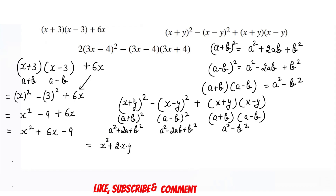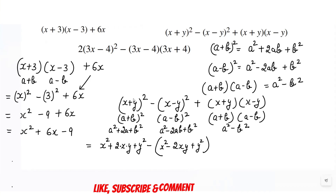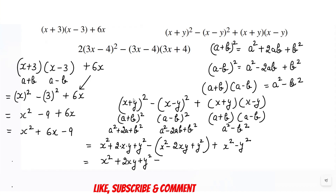We write x squared plus 2xy plus y squared, then put a minus sign and open a bracket. Inside: x squared minus 2xy plus y squared. Then plus x squared minus y squared. Now expanding: x squared plus 2xy plus y squared, then opening the bracket gives minus x squared, minus into minus is plus 2xy, then minus y squared, plus x squared minus y squared.